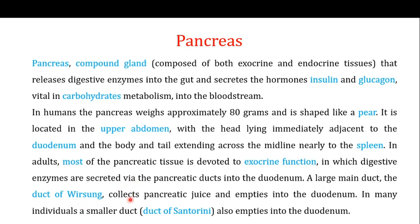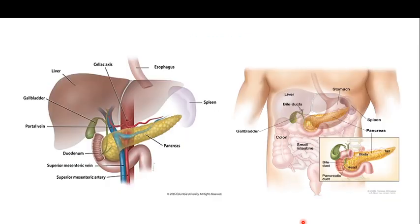A large main duct known as the duct of Wirsung collects the pancreatic juices and empties them into the duodenum. In many individuals there is also a smaller duct known as the duct of Santorini that also empties into the duodenum. All exocrine secretions of the pancreas are released into the duodenum through these ducts to help in digestion.